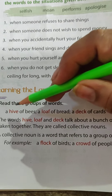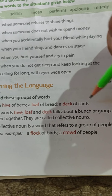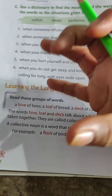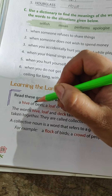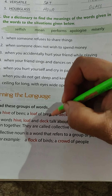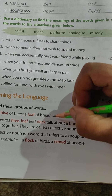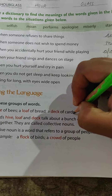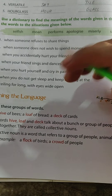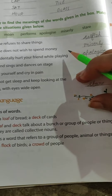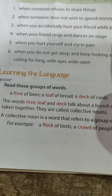See what is given over here — read these groups of words: a hive of bees, a loaf of bread, a deck of cards. You can see the red words highlighted here. This is a collection of something. When there is a collection of bees we say hive of bees. When you buy bread from a market, that entire bread is called a loaf of bread. When you buy cards, the entire set is known as a deck of cards. The words hive, loaf and deck talk about a bunch or group of people or things taken together.